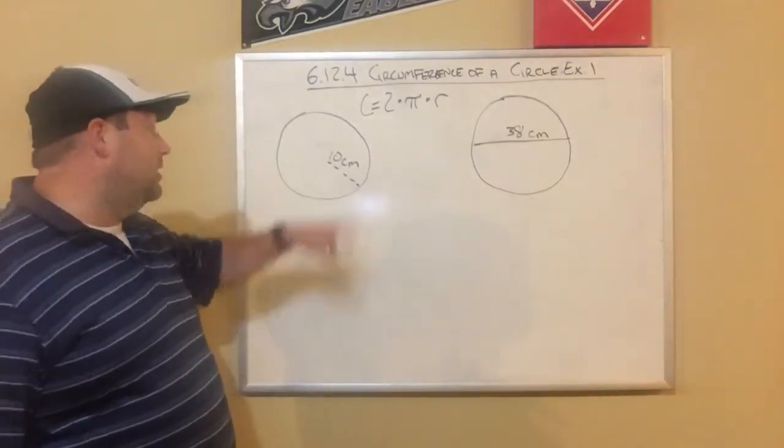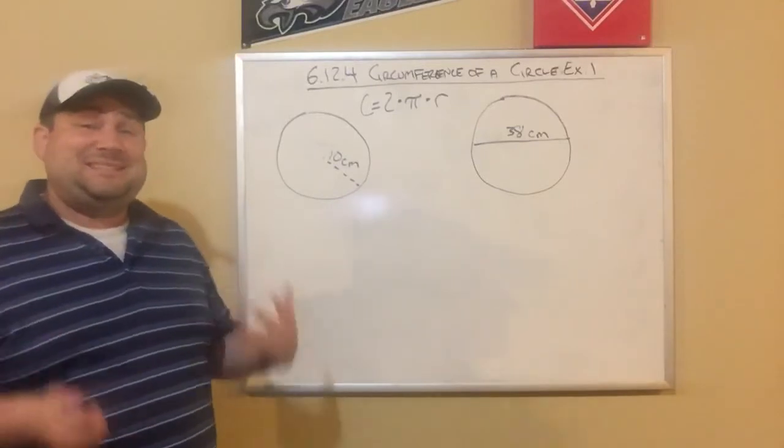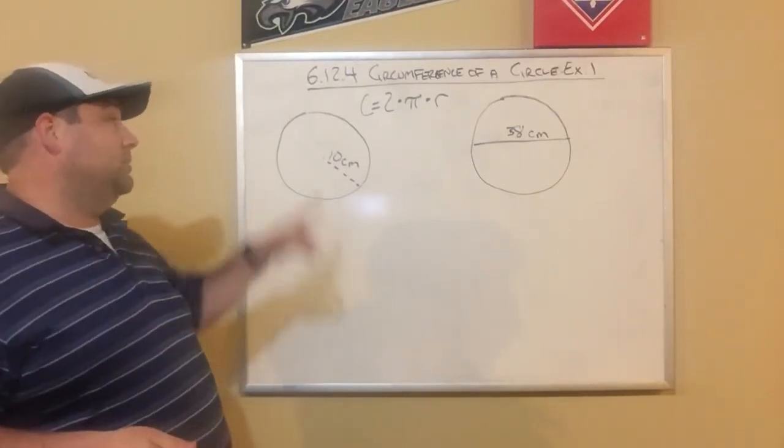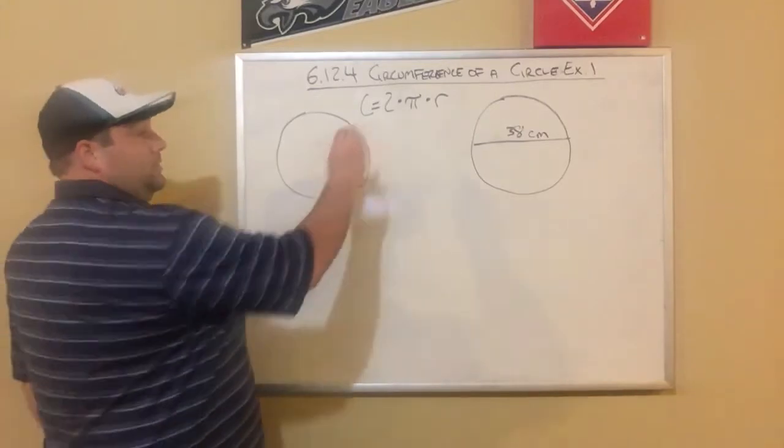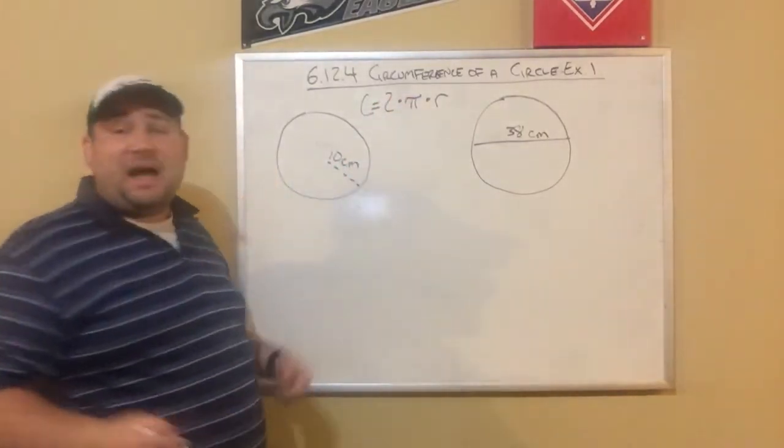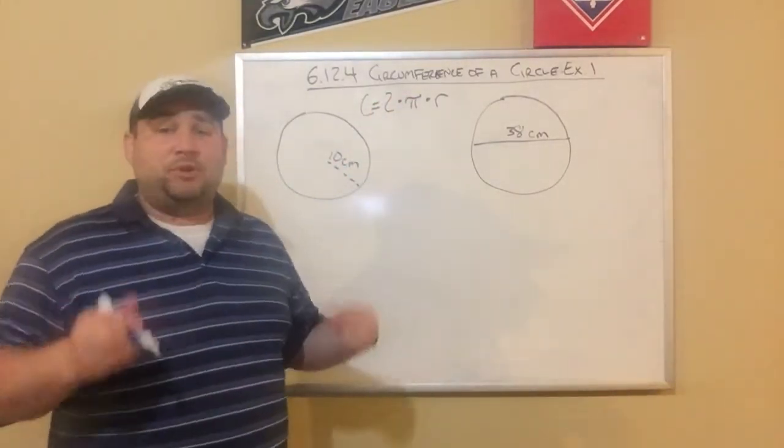So in this circle right here we can see that our radius is 10 centimeters. And what we're going to do is we're going to use this formula. Now, one thing I want you to know about pi, so pi is a number. Pi is the number 3.14